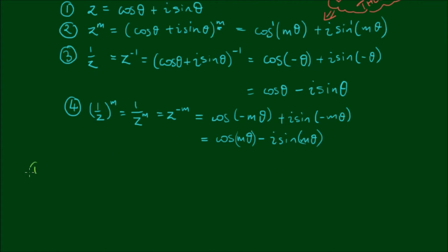Now if we add equations 1 and 3, we have z plus 1 on z is equal to cos theta plus i sine theta plus cos theta minus i sine theta. These cancel to give us 2 cos theta, which is a result that we probably should know already. It's simply 2 times the real component of z.